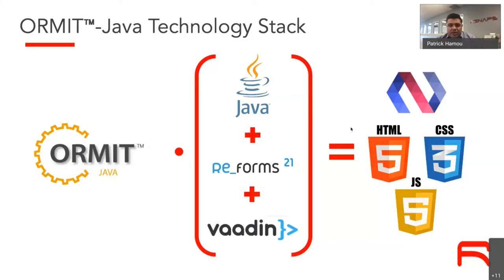The technology stack includes ORMit Java, which is a combination of Java, the ReForMS libraries, migration technology, and it's also based on the Vaadin framework. This is an important aspect because when building a Java application you're open to many different frameworks — some customers might choose Vaadin, others might choose Angular or Vue — there are many frameworks on the market.